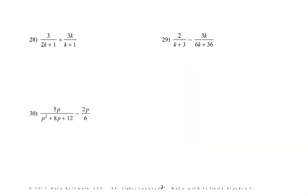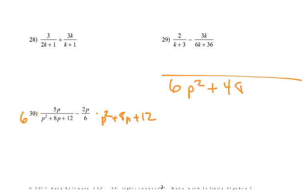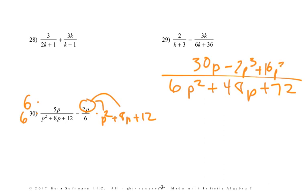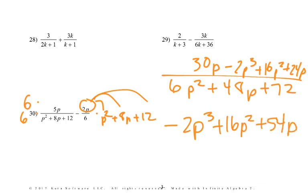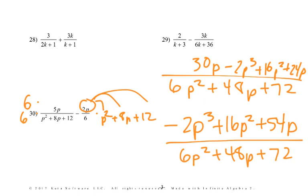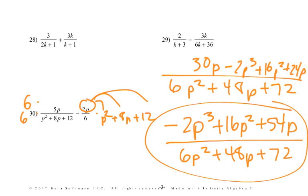The last one, number 30: multiply the left side by 6 and the right side by p squared plus 8p plus 12. We end up with 6p squared plus 48p plus 72 as our denominator. 6 times 5p is 30p, minus 2 times p squared is 2p cubed plus 16p squared plus 24p, all over 6p squared plus 48p plus 72. Once again we could try to simplify to see if anything matches up, but most likely they don't. When they get this crazy, usually we just call it good there.